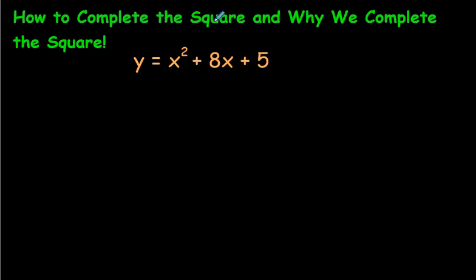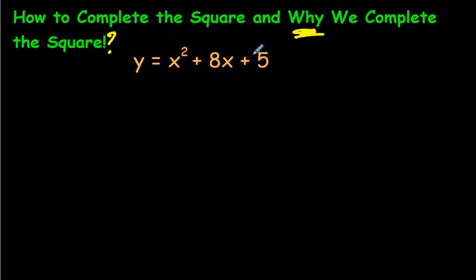Sometimes in math class, you're going to be asked to complete the square. Why do we complete the square? Well, sometimes when you see an equation like this, you are asked to explain, for example, where is the vertex? You could type it into a great program like Desmos and quickly see the vertex, but if you weren't allowed to use Desmos and you had to do it on paper, completing the square is one way to figure out where the vertex is.